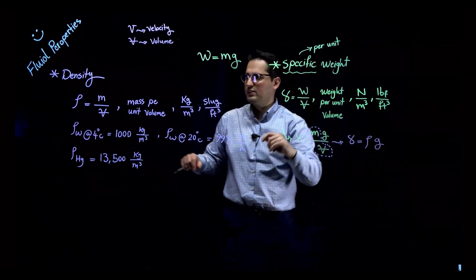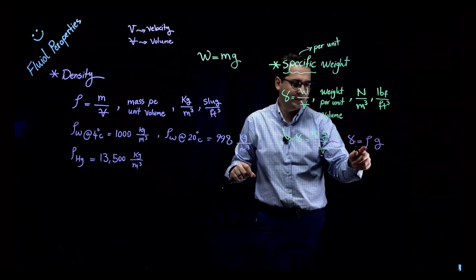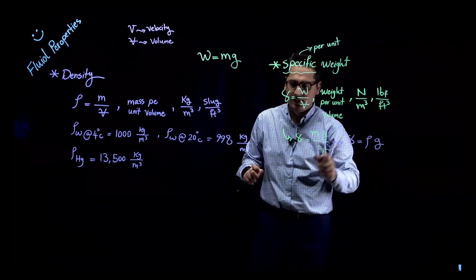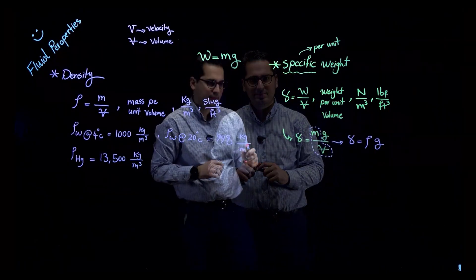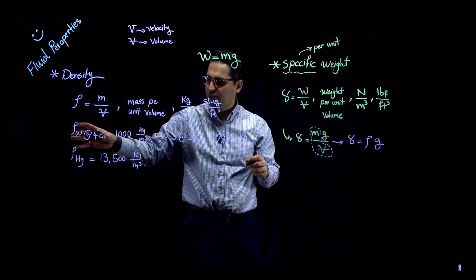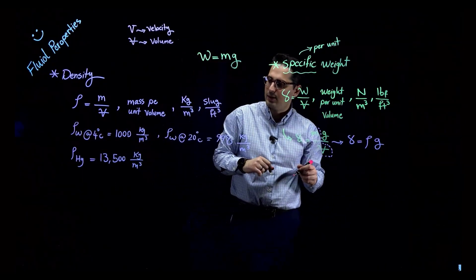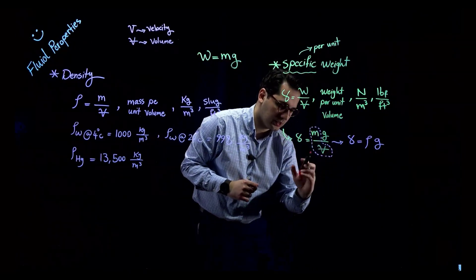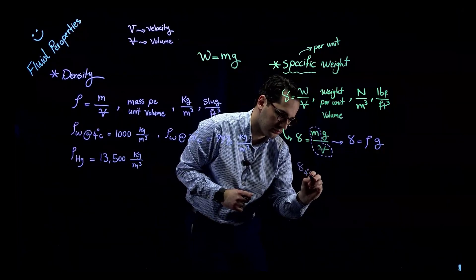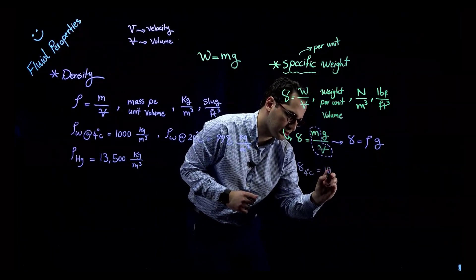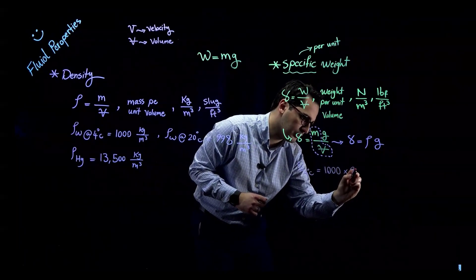Specific weight and density are related: if you have density and multiply by g, the acceleration due to gravity, you get specific weight. At 4 degrees Celsius, the density of water is 1000 kg/m³. So gamma at 4 degrees Celsius for water would be 1000 times 9.81.